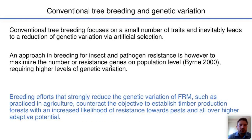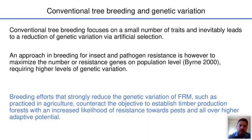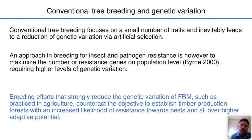Conventional tree breeding focuses on a small number of traits and inevitably leads to a reduction of genetic variation via artificial selection. An approach in breeding for insect and pathogen resistance is to maximize the number of resistance genes at population level, which obviously requires a higher level of genetic variation. Breeding efforts that strongly reduce genetic variation of forest reproductive material — such as practiced in agriculture — counteract the objective to establish timber production forests with an increased likelihood of resistance towards pests and overall higher adaptive potential.